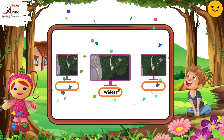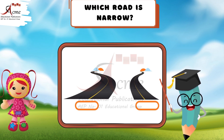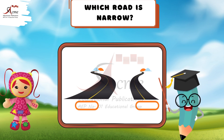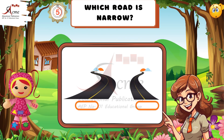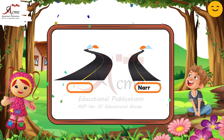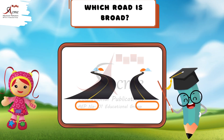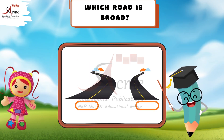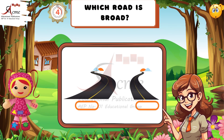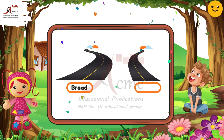Understanding narrow and broad. Now, look at the two roads in the picture. Can you guess which road is narrow? Correct. The second road is narrow. Now, look at the roads again. Can you guess which road is broad? Correct. The first road is broad.